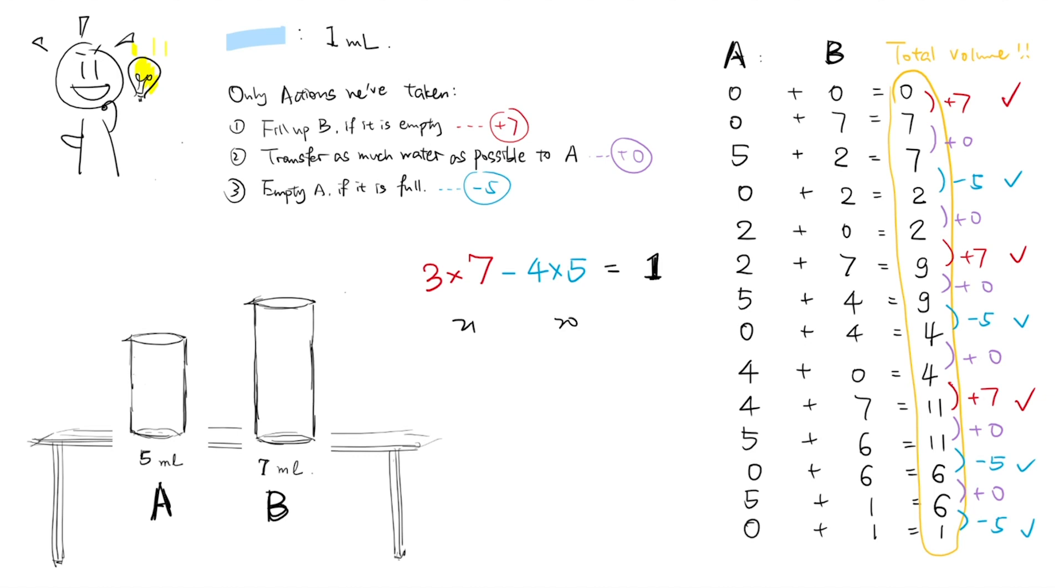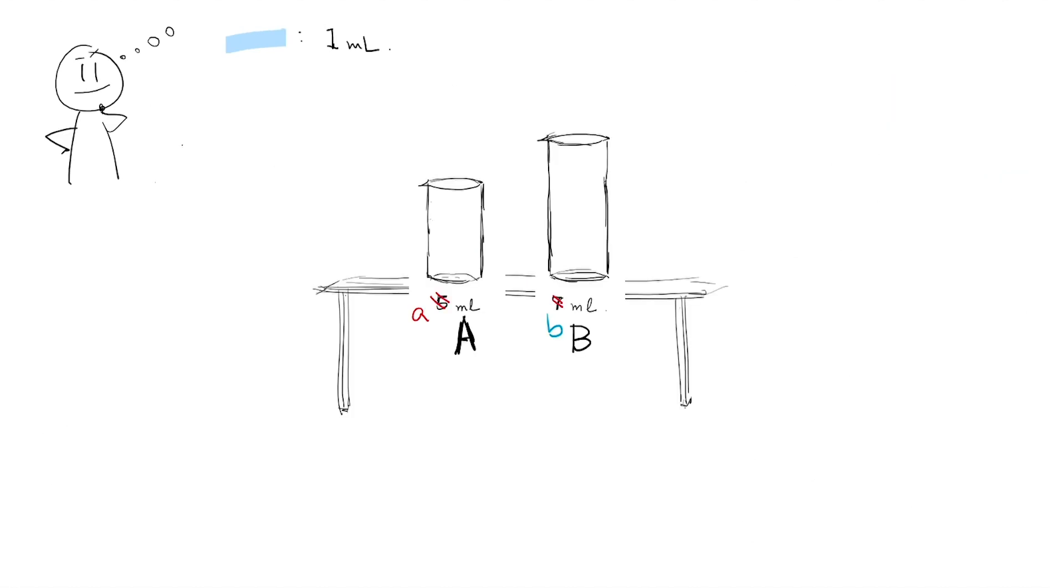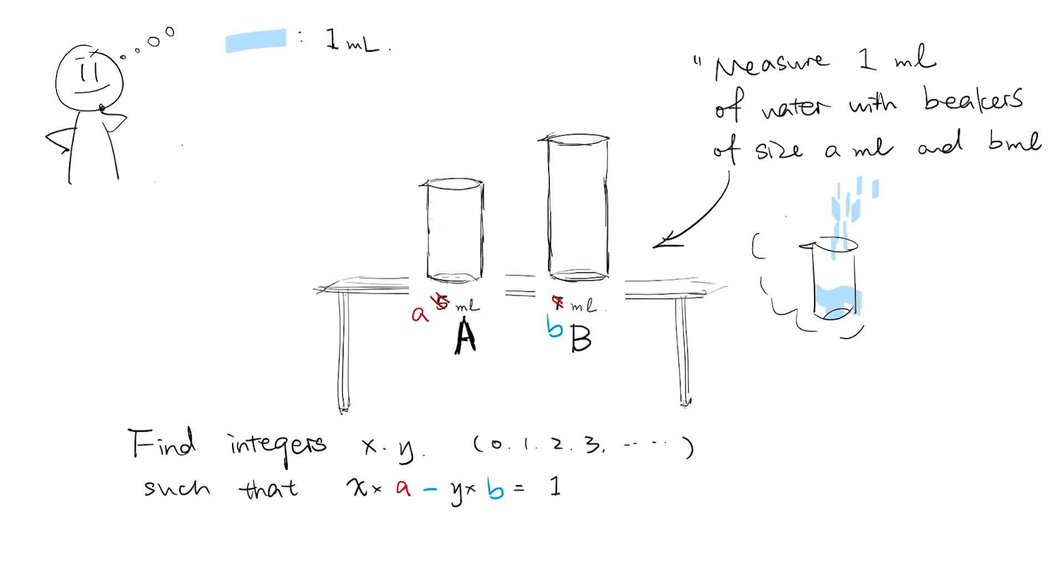As can be easily generalized, to measure 1 milliliter of water with beakers of size A and B milliliters, we need to find two non-negative integers x and y, those like 0, 1, 2, 3, and etc., that satisfy the equation x times A minus y times B is equal to 1. Because all the numbers here of interest, be it A or B or X or Y related to this equation, are integers, this equation has been given a cool name, linear Diophantine equation.